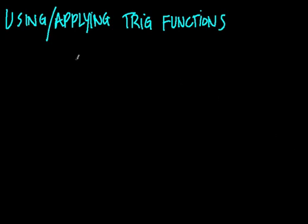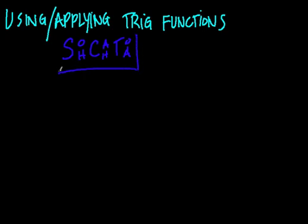We always go back to our acronym, which is SOHCAHTOA. SOHCAHTOA helps us remember what each function equals. The sine function equals the opposite over hypotenuse. The cosine function equals adjacent over hypotenuse. And the tangent function equals the opposite over adjacent sides.